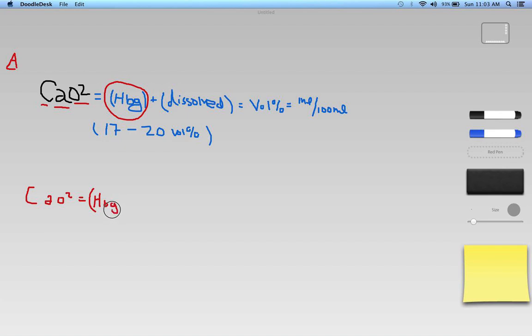Their hemoglobin is generally going to be measured in grams per deciliter. So how many grams per 100 milliliters of blood of hemoglobin do I have? I need to know how much hemoglobin I have in my body, and then I need to multiply that by the saturation. How saturated is the hemoglobin?